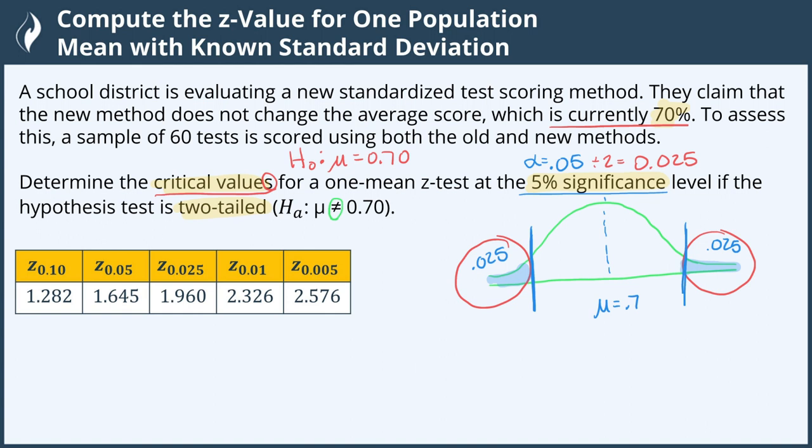So let's go look at the chart, and we are looking for the point of 0.025 right here, giving us a critical value of 1.96.